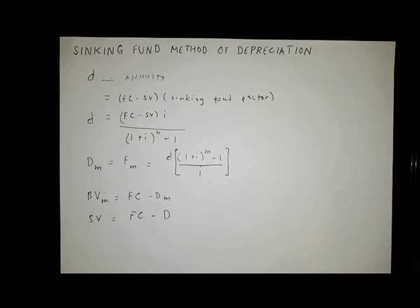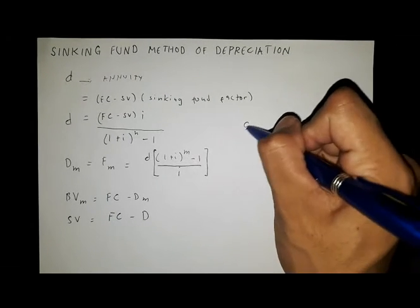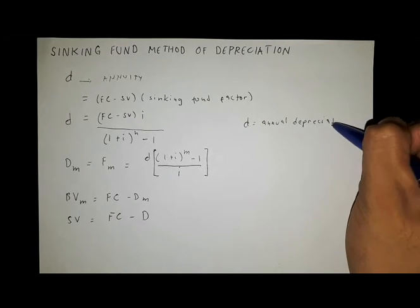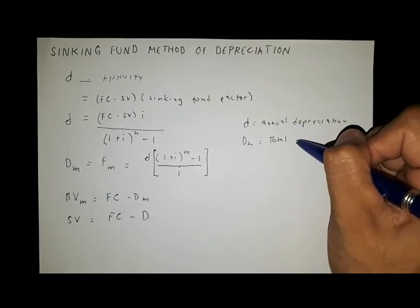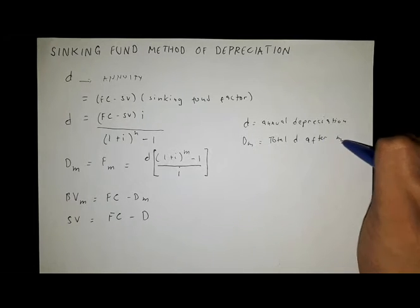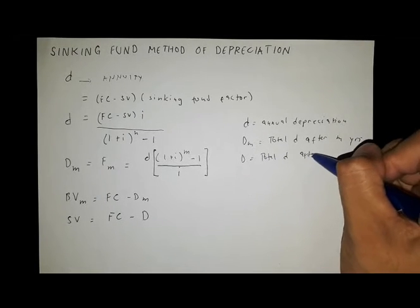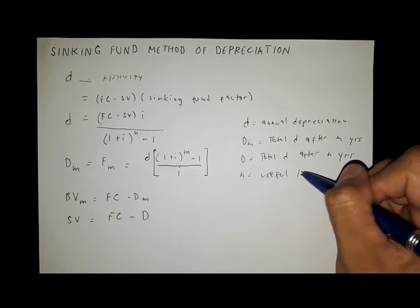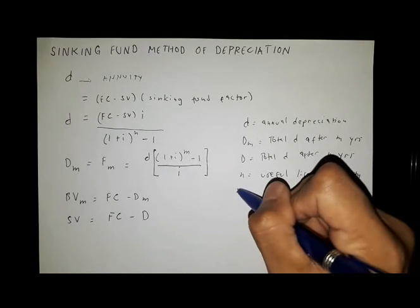To further understand the application of this method, let us solve a sample problem. D is the annual depreciation. DM is the total depreciation after M years. D total is the total depreciation after N years, where N is the useful life of the property and M is any time before N.